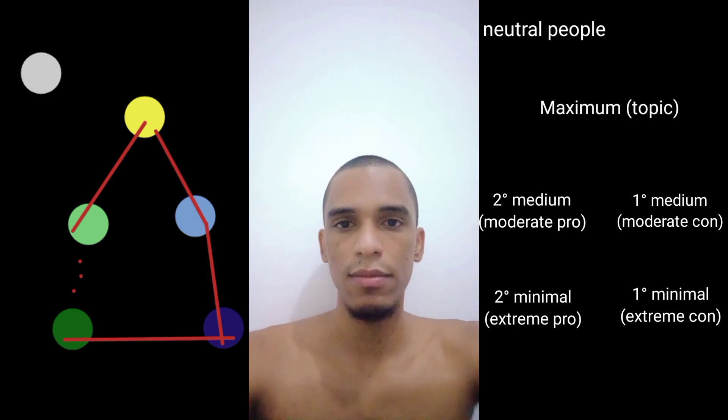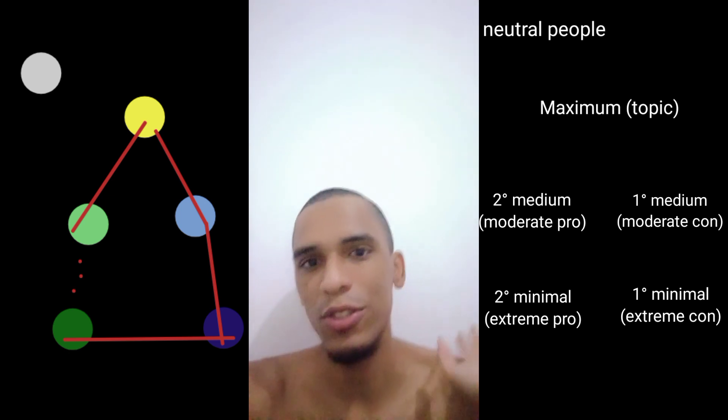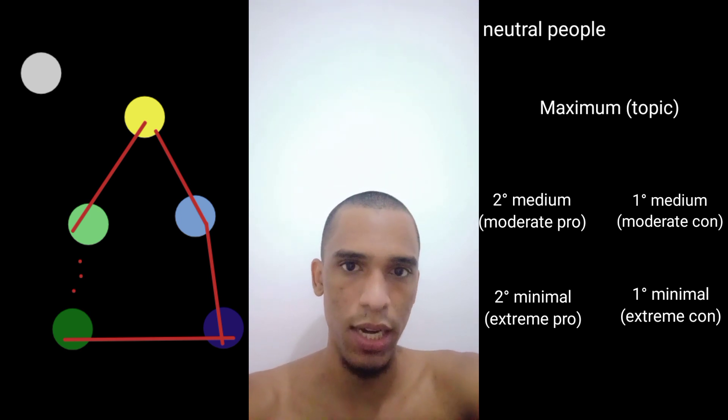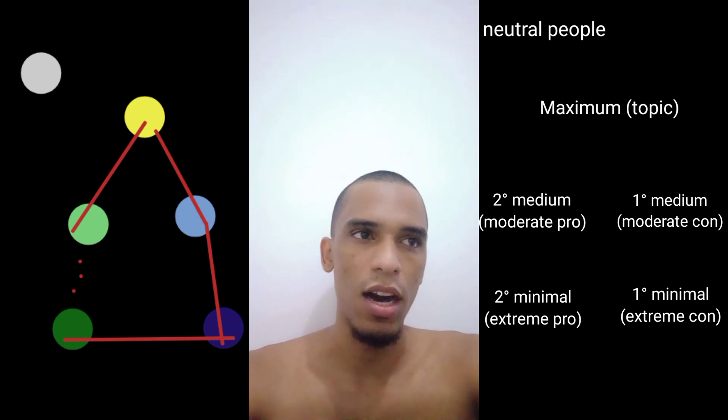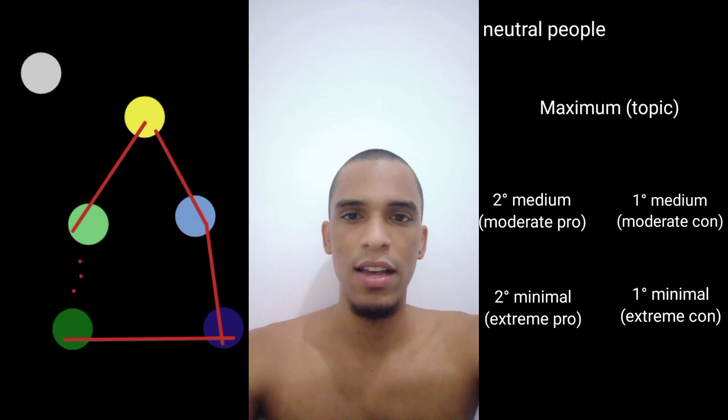The sixth point is the neutral one. It's like outside of this chart because these people don't know about this topic, this subject yet, so they don't have an opinion yet. We have these five main points and the sixth one, and what's interesting...